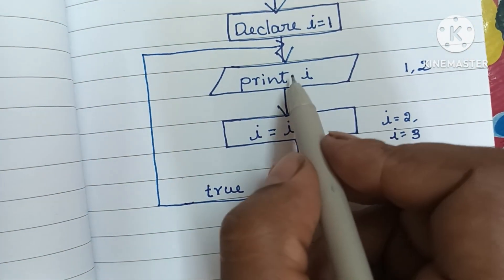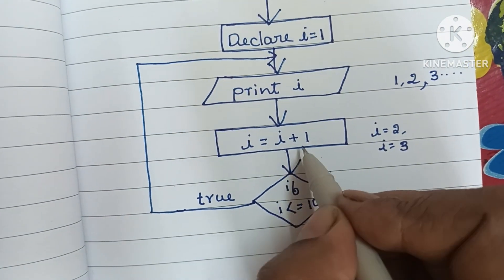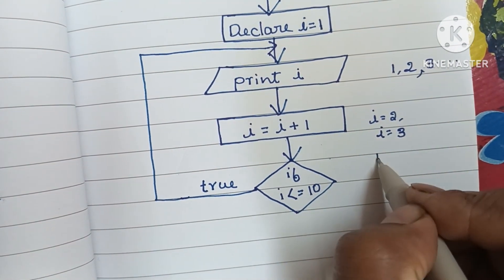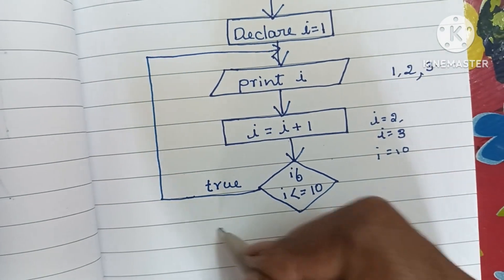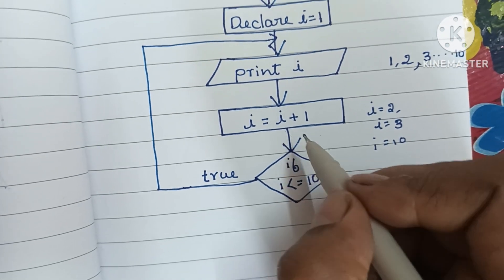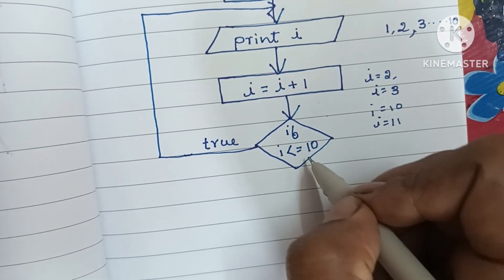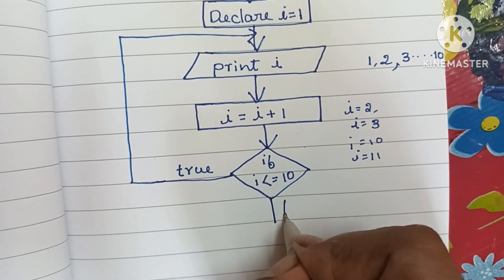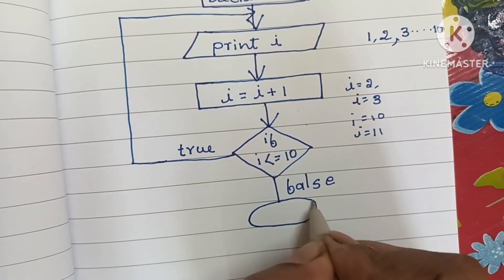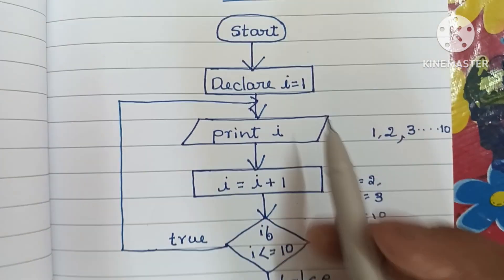Again it checks if 3 is less than or equal to 10 — true — so it prints 3. When i value becomes 10, it checks if 10 is less than or equal to 10 — that is equal, so true — it prints 10. Then i increases to 11. It checks if 11 is less than or equal to 10 — false. If it is false, we have to stop the flowchart using the stop statement, which is written within an oval shape.